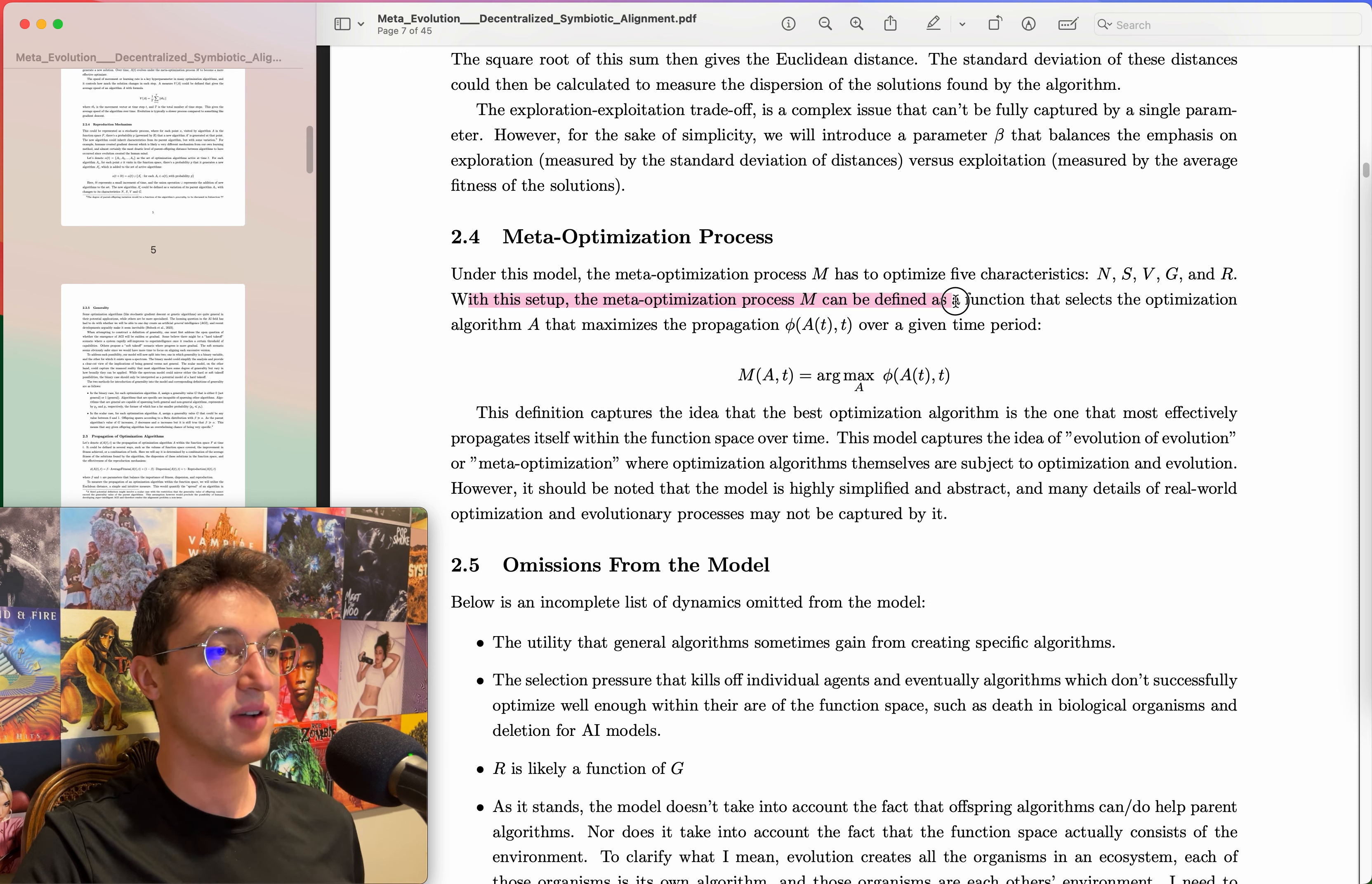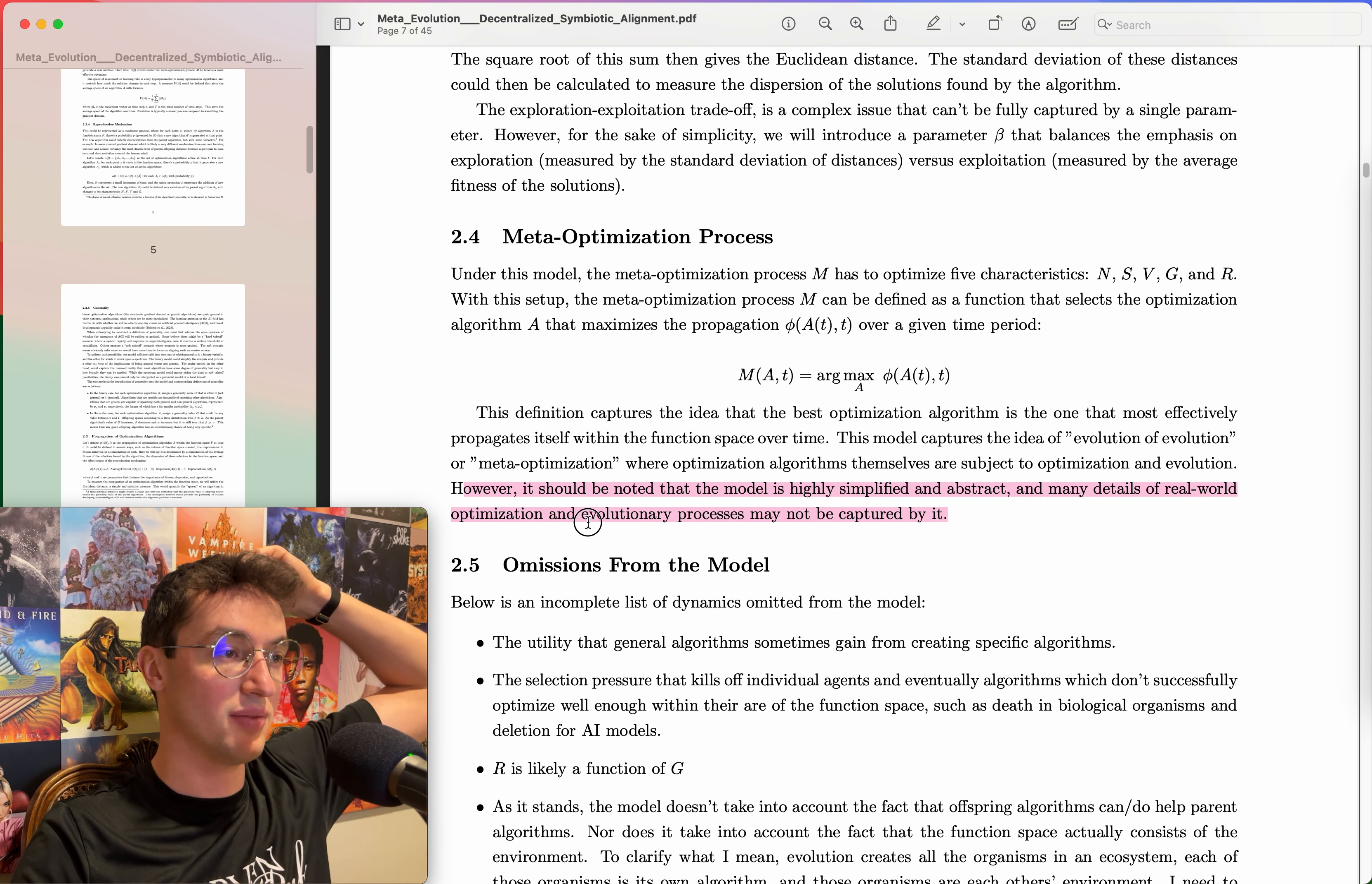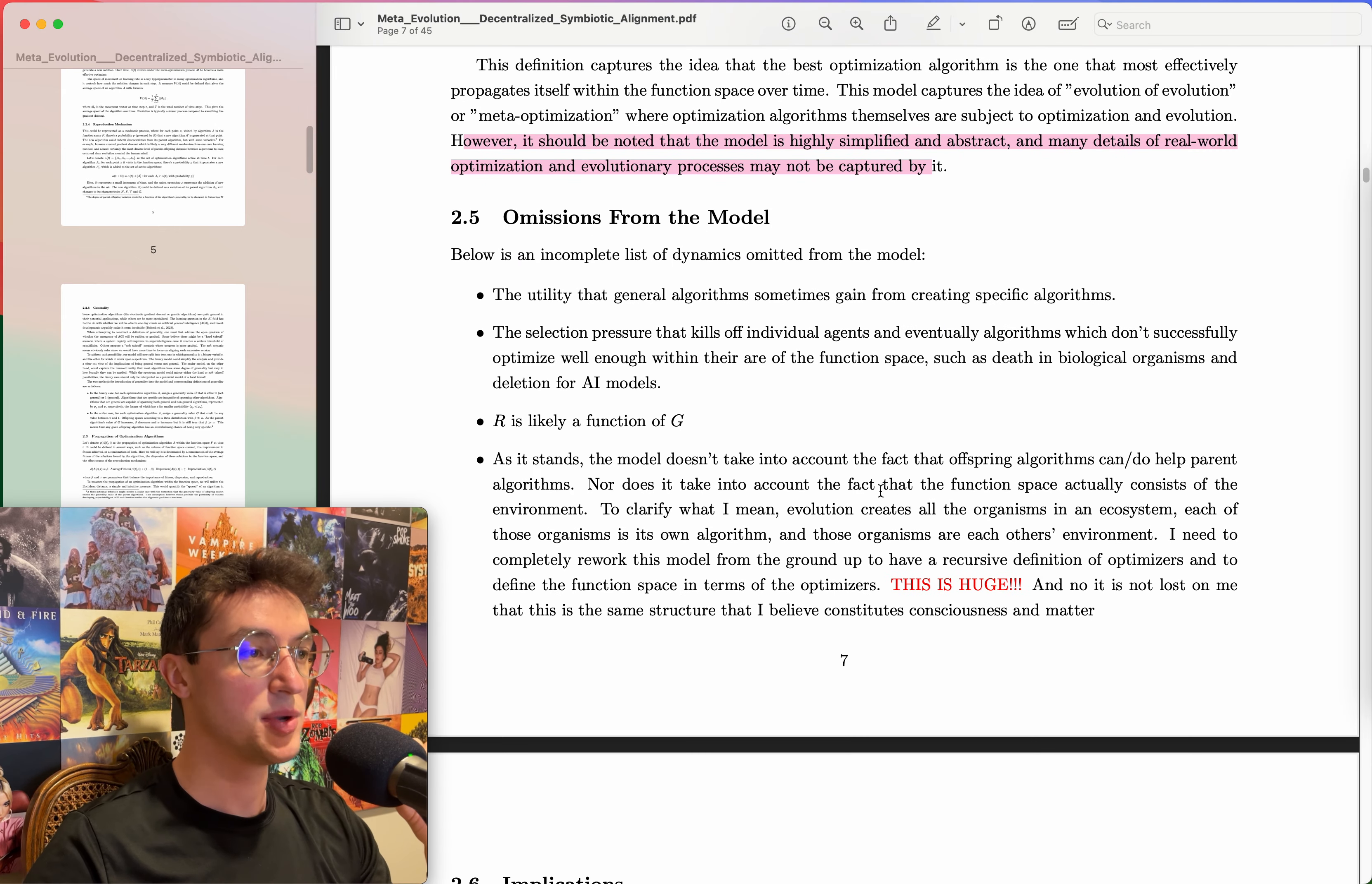Meta optimization: under this model, the meta optimization process M has to optimize five characteristics: n, s, v, g, and r. With this setup, the meta process M can be defined as a function that selects optimization algorithm A that maximizes the propagation phi of A of F of t over a given time period. So M is selecting the algorithm to choose that will optimize that phi, how good it actually is. This definition captures the idea that the best optimization algorithm is the one that most effectively propagates itself within the function space over time. This model captures the idea of evolution or meta optimization where optimization algorithms themselves are subject to optimization and evolution.